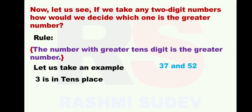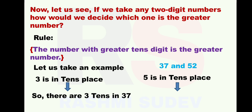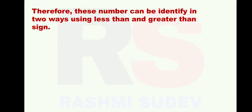But here we are learning comparing numbers, so we need to go one or two steps more. In 37, 7 is in units place and 3 is in tens place. In 52, 2 is in units place and 5 is in tens place. So there are 3 tens in 37 and 5 tens in 52. Therefore, these numbers can be compared using less than or greater than signs.